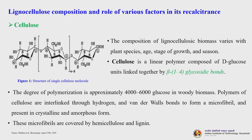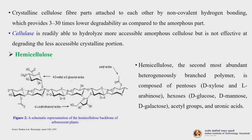Cellulose is a linear polymer composed of D-glucose units linked together by beta-1,4-glycosidic bonds. The degree of polymerization is approximately 4000 to 6000 glucose units in woody biomass. Polymers of cellulose are interlinked through hydrogen and van der Waals bonds to form a microfibril, present in crystalline and amorphous form. These microfibrils are covered by hemicellulose and lignin. Crystalline cellulose fibers have 3 to 30 times lower degradability compared to the amorphous part. Cellulase can readily hydrolyze the more accessible amorphous cellulose but is not effective at degrading the less accessible crystalline portion — which is why pretreatment is needed.